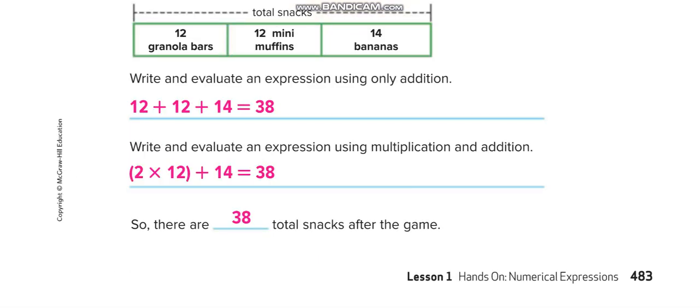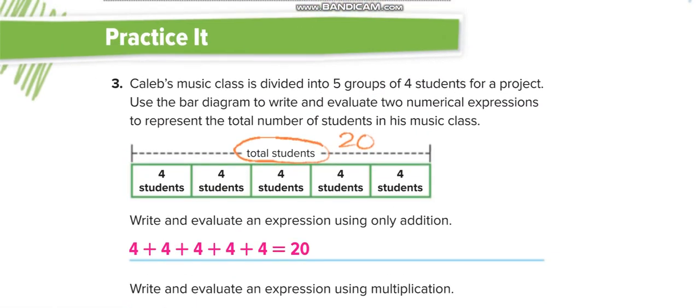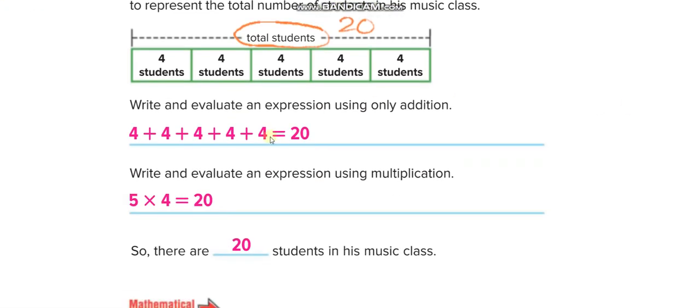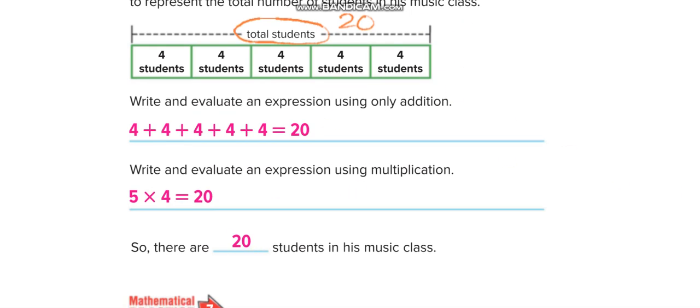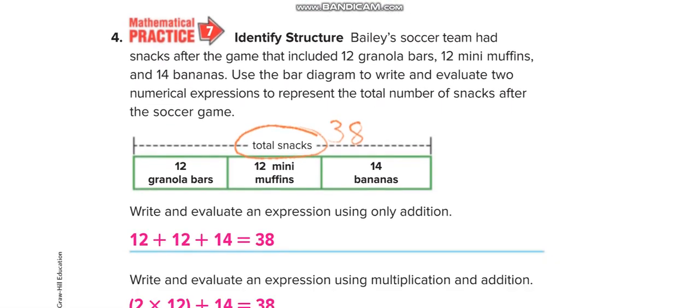Okay, next one—independent practice. You have to read this one and through the bar diagram you have to write the two expressions: the addition one and the multiplication one. 5, 4—simply addition. And then 5, 4—so 5 times 4 equals 20. Okay, try to solve it by yourself first and then match your answers through this video.